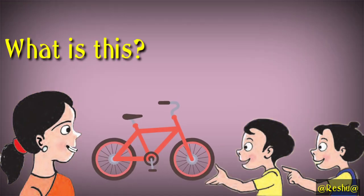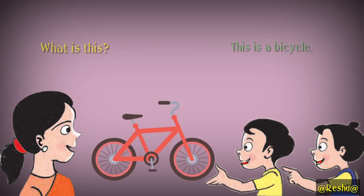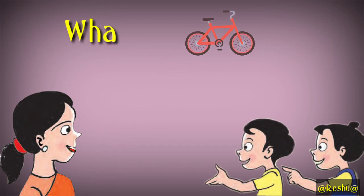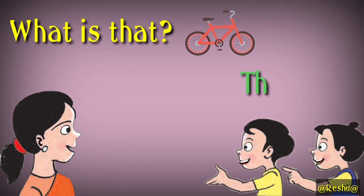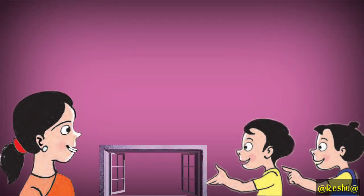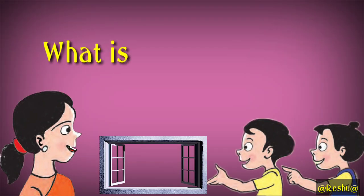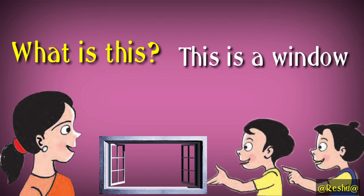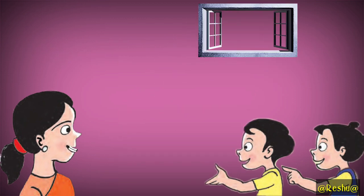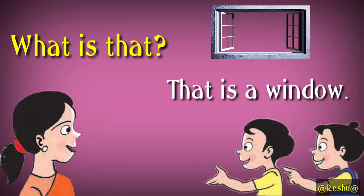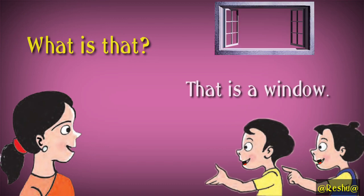What is this? This is the bicycle. What is that? That is a bicycle. What is this? This is a window. What is that? That is a window.